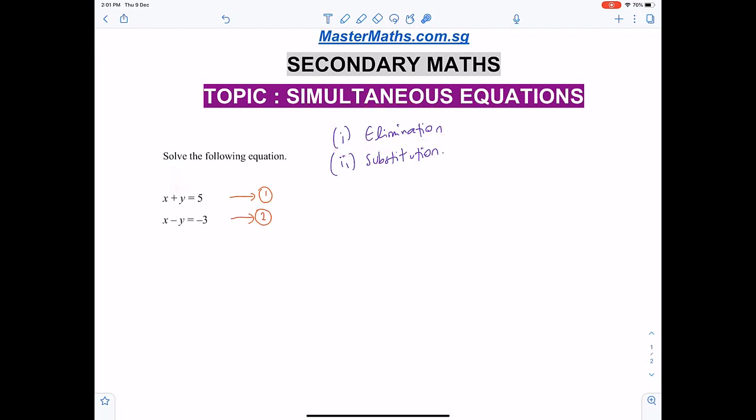First step: ensure that the number before y is the same. In both cases we have 1y. If it's not the same, we need to multiply either equation or perhaps both equations. For example, if we have 2y here and 4y here in the first equation, all the first equation terms need to multiply by 2 so you get 4y.